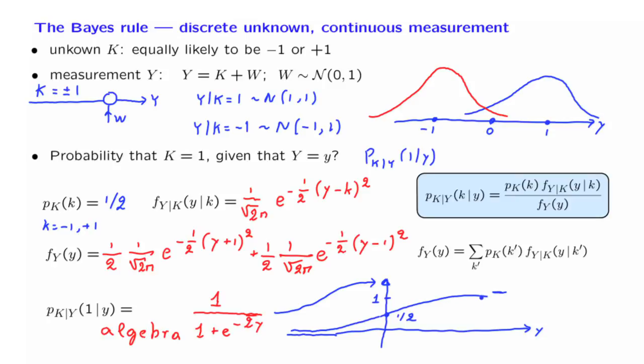If, on the other hand, Y is very, very negative, then it is much more likely that what we're seeing is coming from this distribution so that K is equal to minus 1. And in that case, the probability that K was 1 is going to be approximately 0.